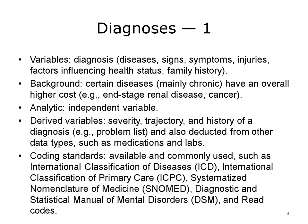Diagnosis data types are commonly used in population health analytics. The common variables comprise various aspects of diagnosis, including the underlying disease, signs, symptoms, injuries, factors influencing health status, and even family history. Certain diagnoses, and various combinations of them — especially chronic conditions — have direct correlation with health care utilization. The higher number of chronic conditions in a comorbidity results in increased probabilities of higher health care utilization rates. Thus, diagnosis is commonly used as an independent variable to predict various population health outcomes, such as future cost.